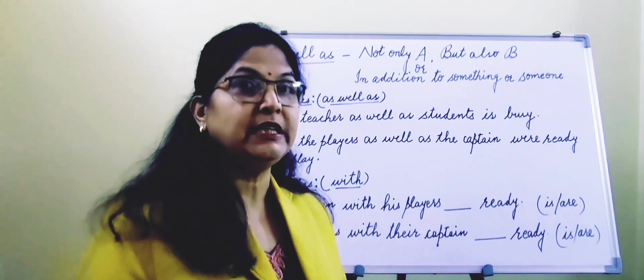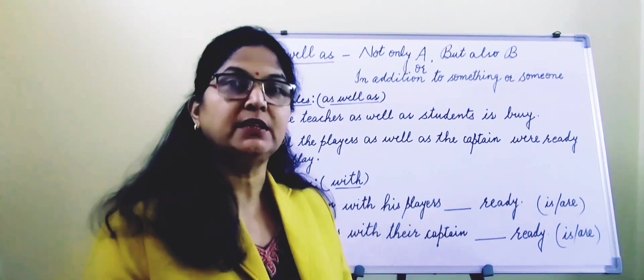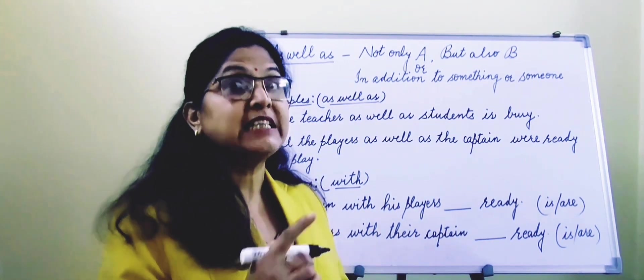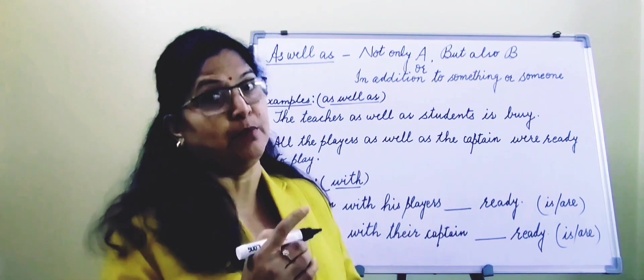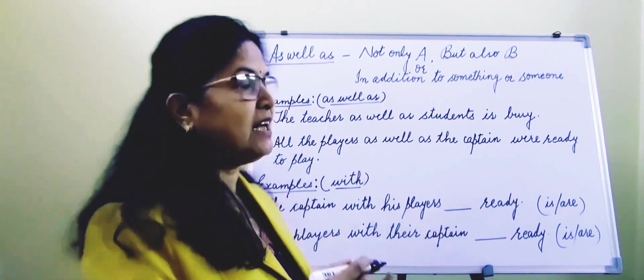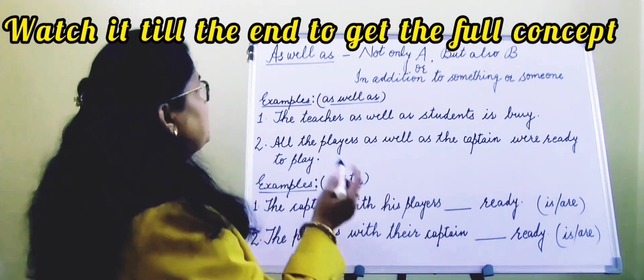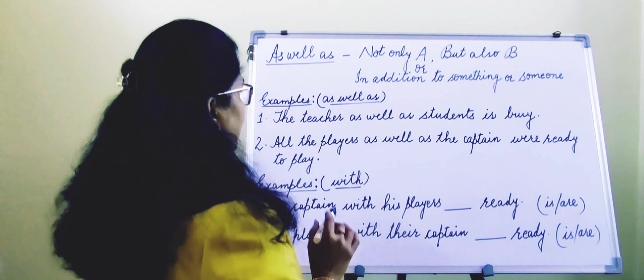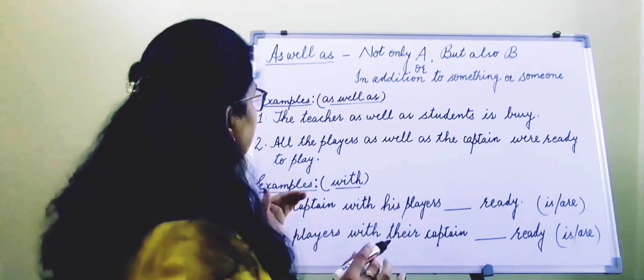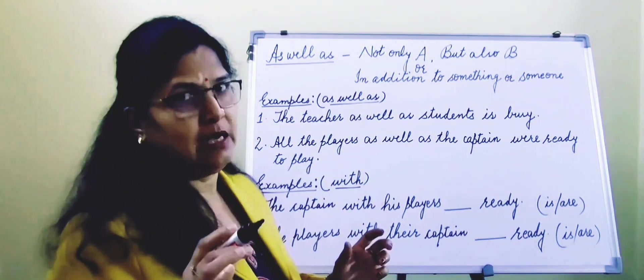You have studied in the rule neither nor, either or, that the verb agrees with its second subject or the nearest subject. So let us understand what happens. How do we deal when subjects are joined by as well as or by with? Let us understand with a few examples.